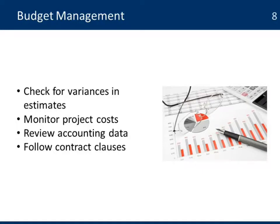Here are some tips to help you on budget management. Check for variances in the estimates, like schedule and time estimates. Cost estimates are not always accurate and they tend to change — those changes are usually external to the project, like currency fluctuations. Inflation is another element that will have an impact over time on the cost of the goods and services your project needs to procure. Monitor those projects.